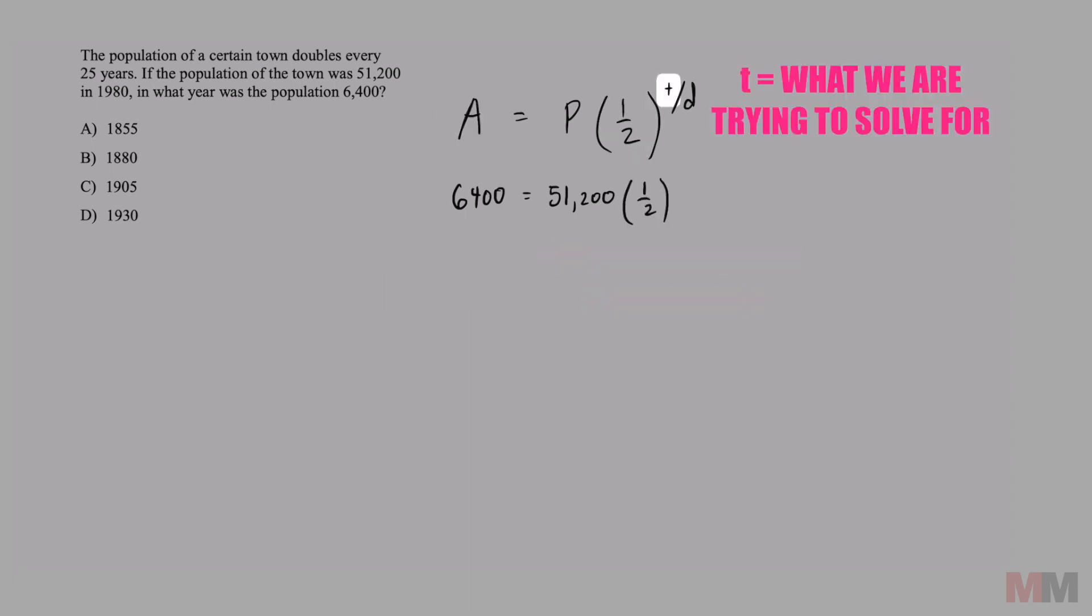One-half is just a constant. We're trying to figure out the time that it takes for this population to turn into 6,400, so we don't have that time. We're just going to leave that as T divided by D. D represents the number of years that it takes to cut this population in half, which is going to be 25 years.